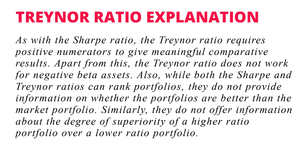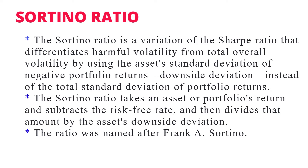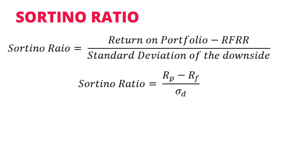Similarly, they do not offer information about the degree of superiority of a higher-ratio portfolio over a lower-ratio portfolio. The other measure is the Sortino Ratio. The Sortino Ratio is a variation of the Sharpe Ratio that differentiates harmful volatility from total overall volatility by using the standard deviation of negative portfolio returns, i.e., downside deviation, instead of total standard deviation. The Sortino Ratio takes a portfolio's returns, subtracts the risk-free rate, and then divides by downside deviation. The ratio was named after Frank A. Sortino. The Sortino Ratio equals return on the portfolio minus the risk-free rate of return, divided by the standard deviation of the downside.